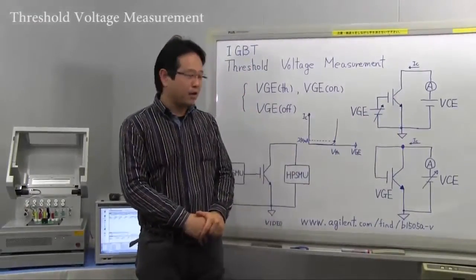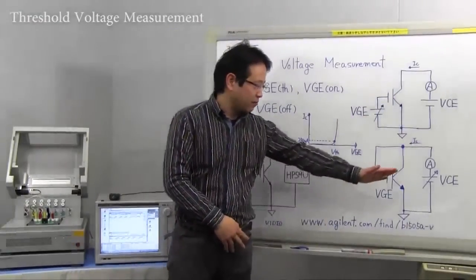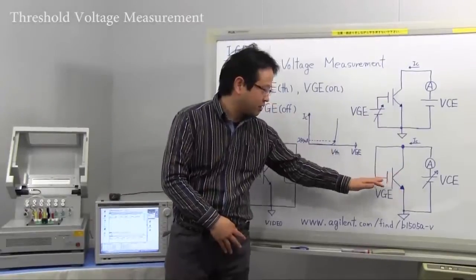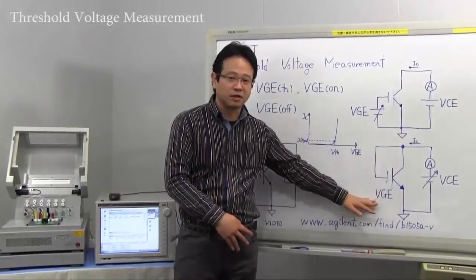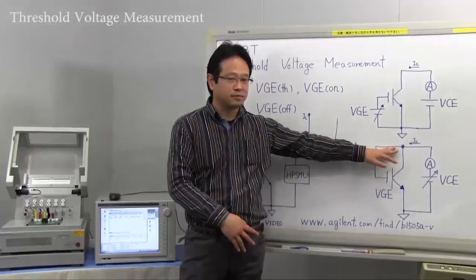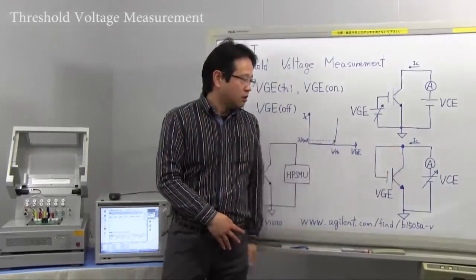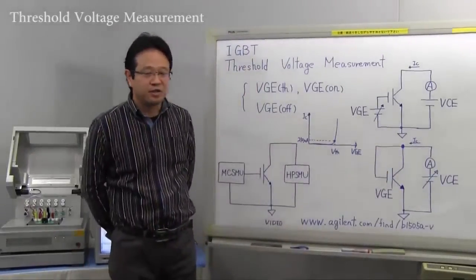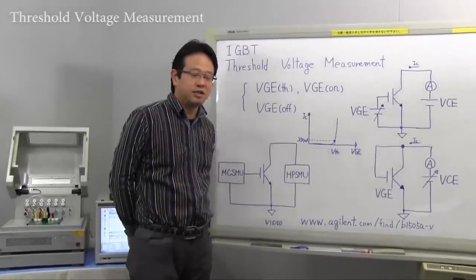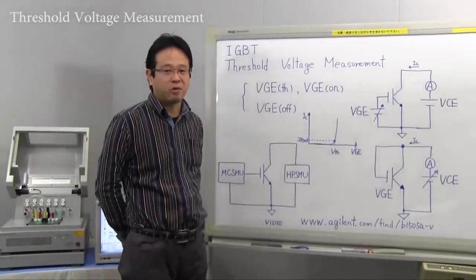Another one is to apply the gate to the collector voltage equal. Connect the gate to the collector, then sweep the gate emitter voltage to detect the collector current. This measurement setup is realized easily and quickly by using the B1505A.